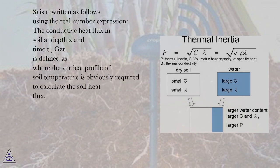Equation 3 is rewritten as follows using the real number expression. The conductive heat flux in soil at depth z and time t, G(z,t), is defined as: where the vertical profile of soil temperature is obviously required to calculate the soil heat flux.